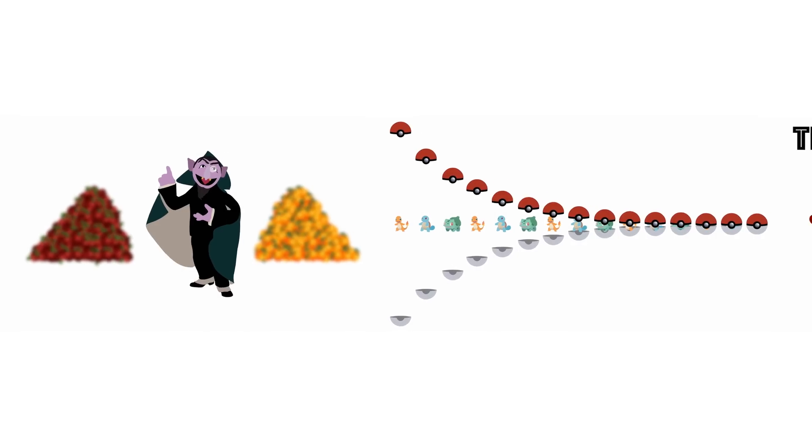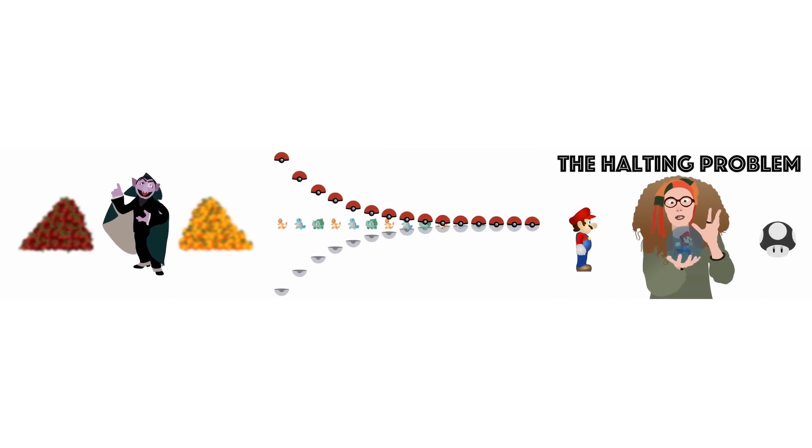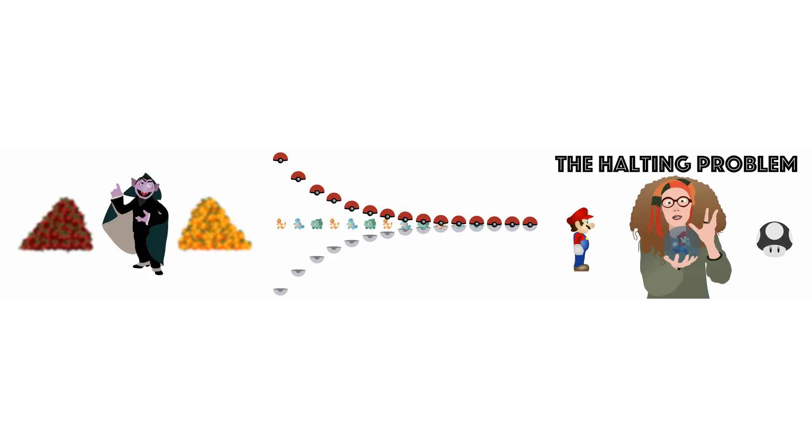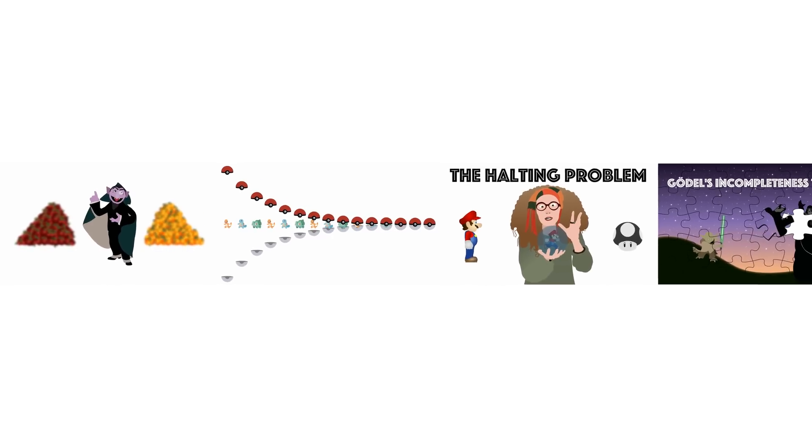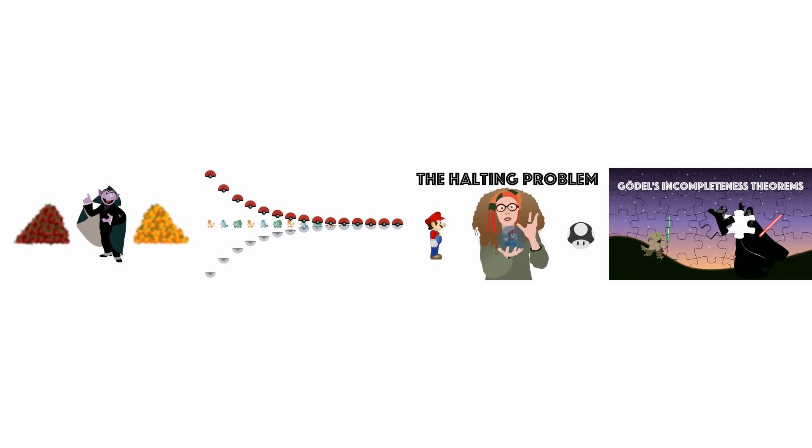Afterward, we applied Cantor's diagonalization to computer science to understand how the halting problem is unsolvable. Now, we'll be using the undecidability of the halting problem to help prove Gödel's theorems.